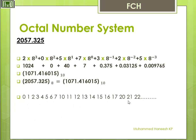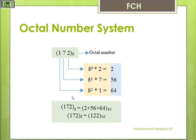Here are the first N octal numbers: 0, 1, 2, 3, 4, 5, 6, 7. Then 8 — it is not an octal number. So we go to 10, 11, 12, 13, 14, 15, 16, 17. Then 18 is eliminated because 8 is not in the octal number system. Then 20, 21, 22, and so on.